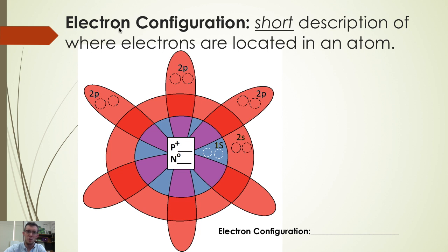So what chemists will do is they will express electron location in something called an electron configuration, which is just a short description of where electrons are located in an atom.